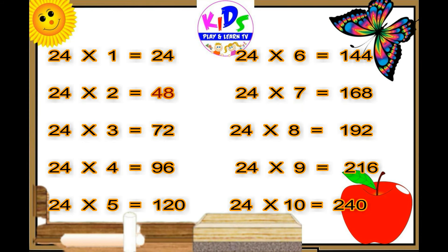24 ones are 24, 24 twos are 48, 24 threes are 72, 24 fours are 96, 24 fives are 120.